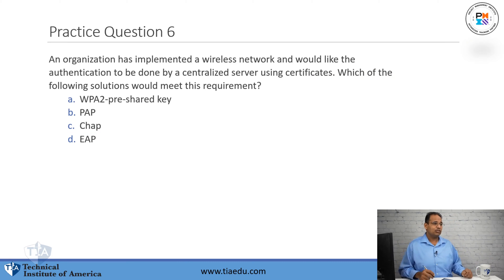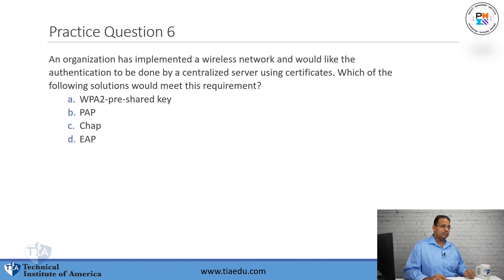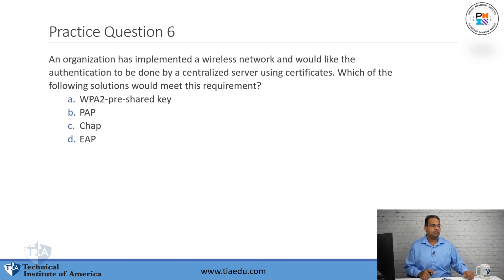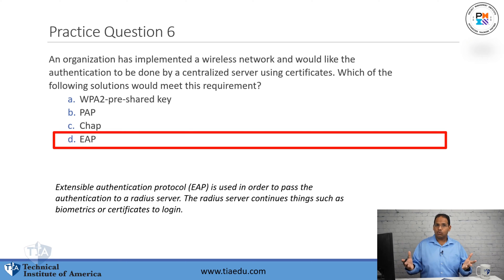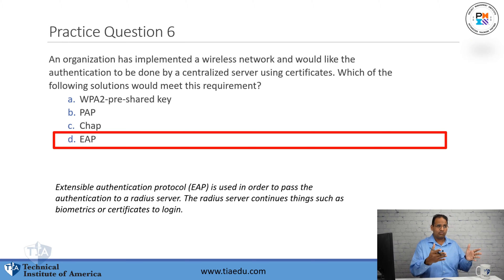Practice question six: An organization has implemented a wireless network and would like authentication to be done by a centralized server using a certificate. Which of the following solutions would meet this requirement? A. WPA2 pre-shared key. B. PAP. C. CHAP. D. EAP. The answer is EAP, Extensible Authentication Protocol. EAP utilizes a RADIUS server — the centralized server that allows you to perform stronger authentication such as using certificates or smart cards to log in. You can use RADIUS servers on VPNs and on wireless networks.